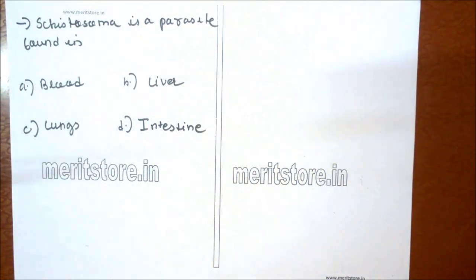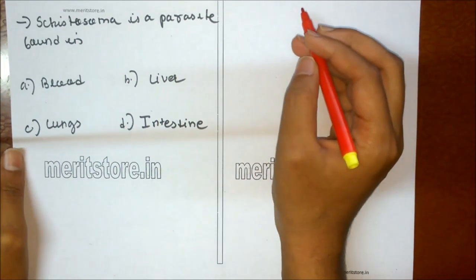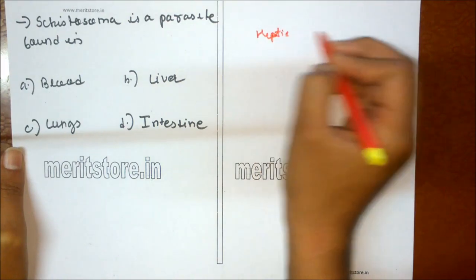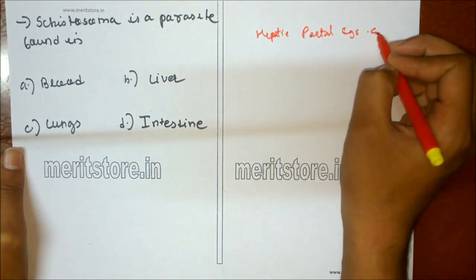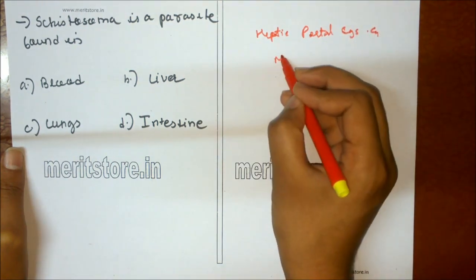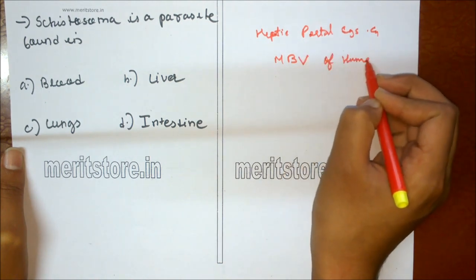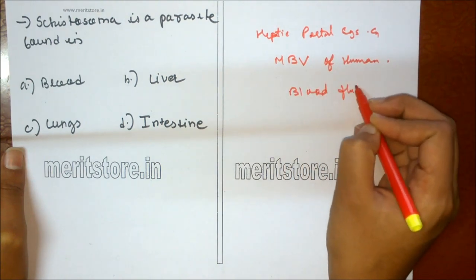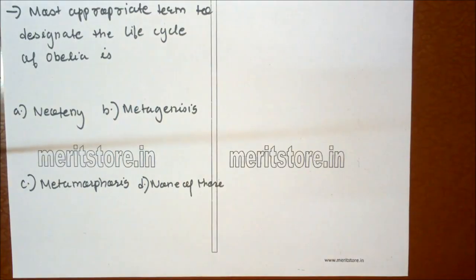Schistosoma is a parasite found in: A blood, B liver, C lung, D intestine. Schistosoma is a platyhelminth that lives in the hepatic portal system and mesenteric blood vessels of human beings, so it is commonly known as the blood fluke. Option A is the correct answer.